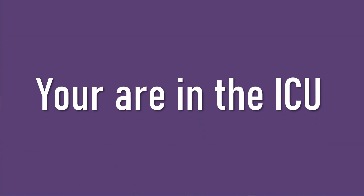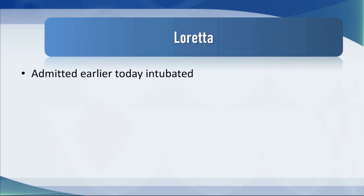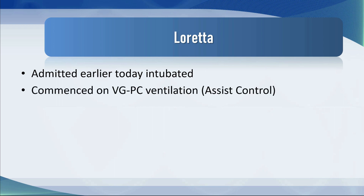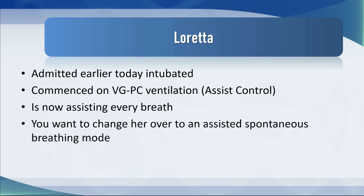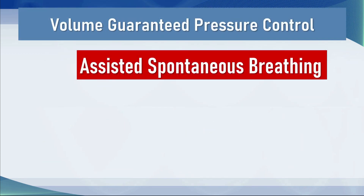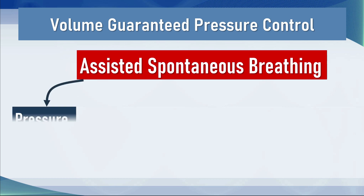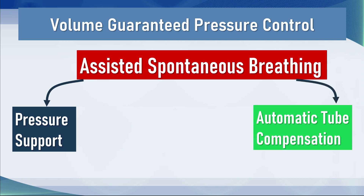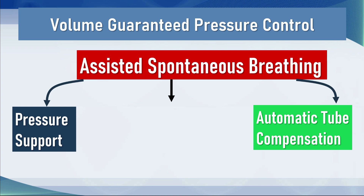Let's go back to the ICU. We had a patient called Loretta who was admitted earlier today, intubated, and we put her on volume guaranteed pressure control — the assist control mode. Now she's assisting every breath and you want to change her over to assisted spontaneous breathing. There are three real options for the majority of patients: pressure support, which we've talked about in earlier tutorials, automatic tube compensation, and the third one is volume support.